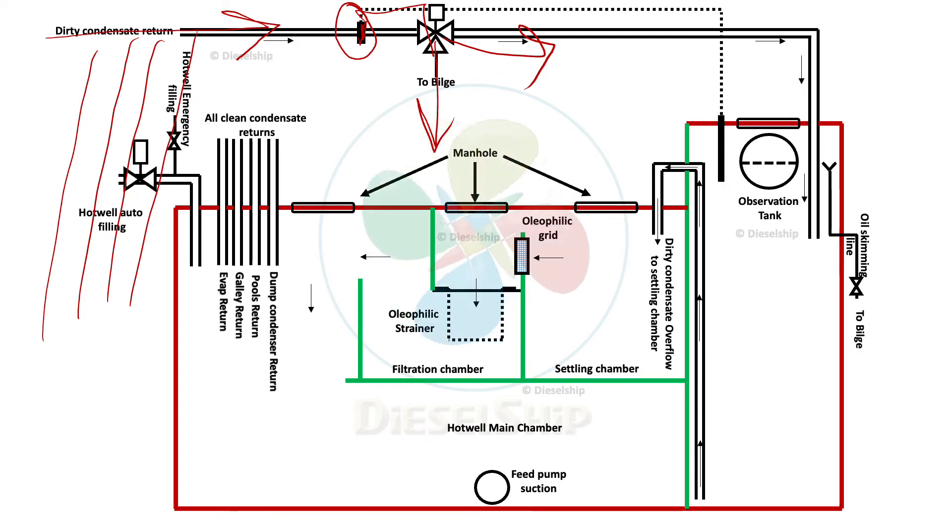There is also another oil sensor here in the observation tank itself. If there is any oil detected there, that will also trigger the three-way valve to open. In most systems, even the dump condenser has a three-way valve because it is cooled by seawater. There may be seawater contamination, but there it is a salinity meter that controls the three-way valve, either putting it to the hot well or dumping it to the bilge.